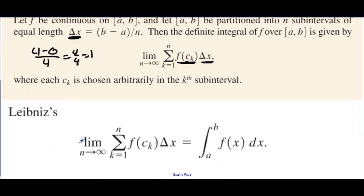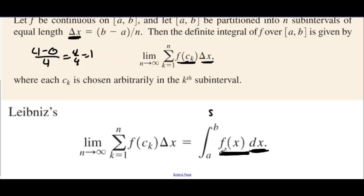Leibniz had different notation for this summation. He made it an elongated S. The interval a to b is where we're finding the integral, and then we have f of x times dx. The dx represents the change in x, and f of x is really the height of each rectangle.